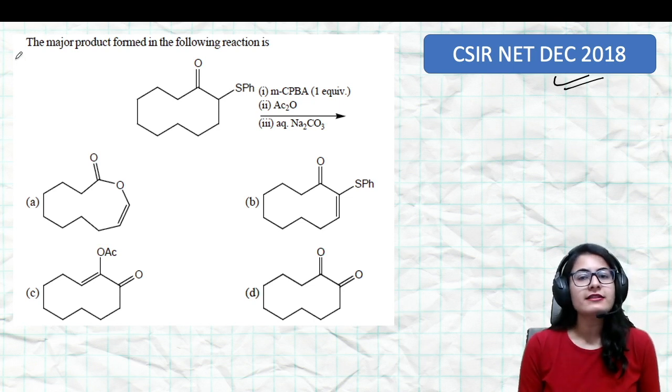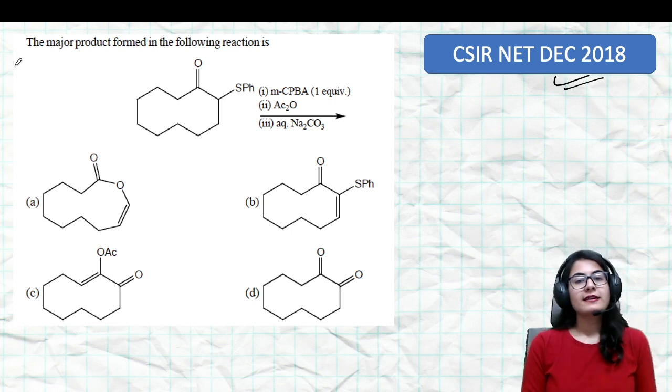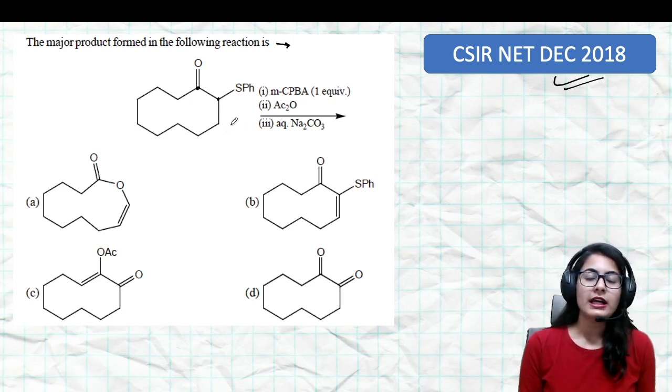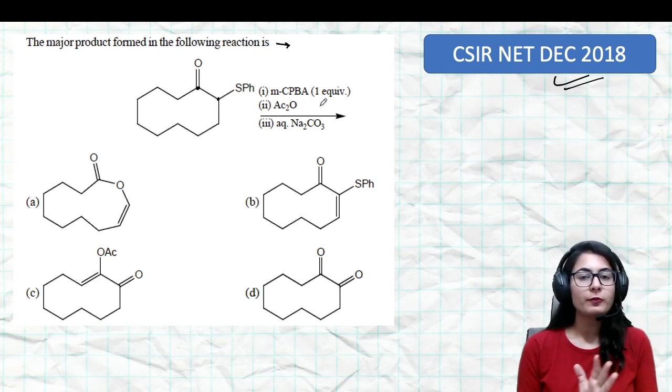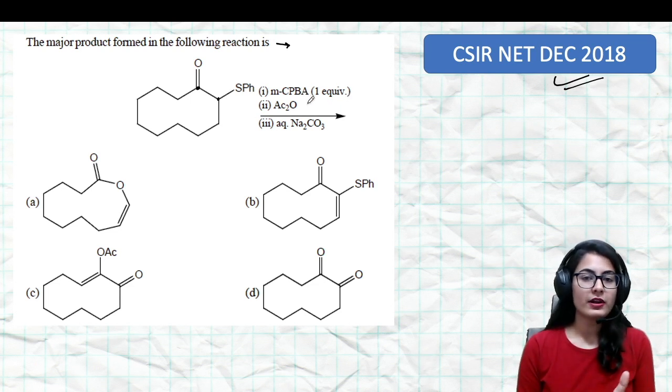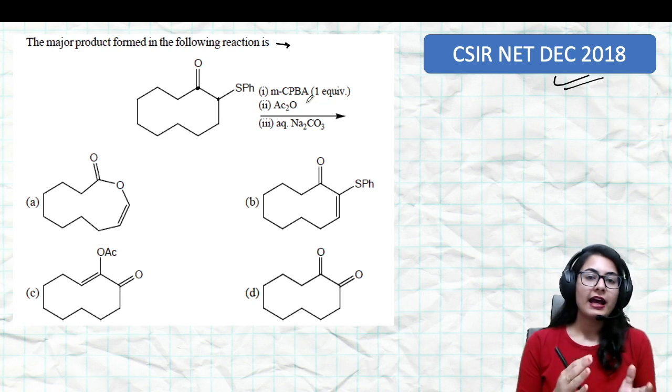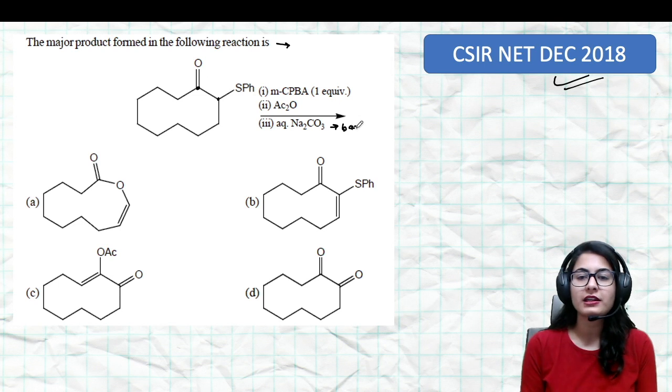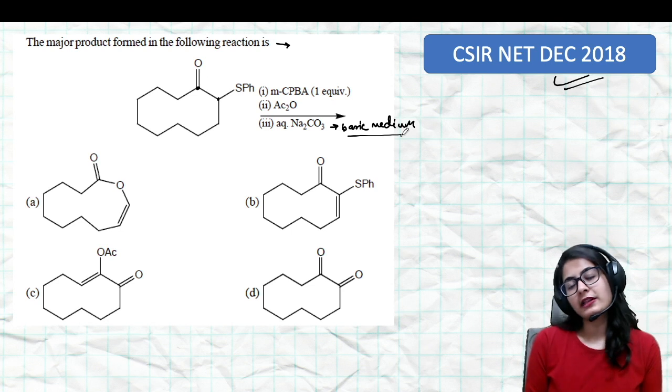This is a very simple question from CSIR NET December 2018. The major product formed in the following reaction: You see there's a ketone and on the alpha position you have a thiol group. In the first step you're adding metachloroperbenzoic acid one equivalent, second step acetic anhydride, third step aqueous Na2CO3 which is providing a slightly basic medium.